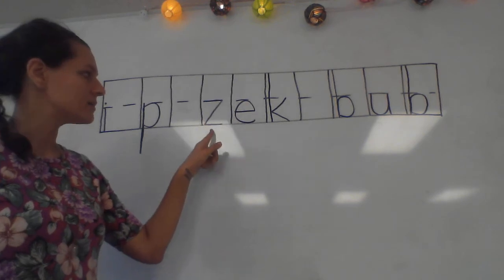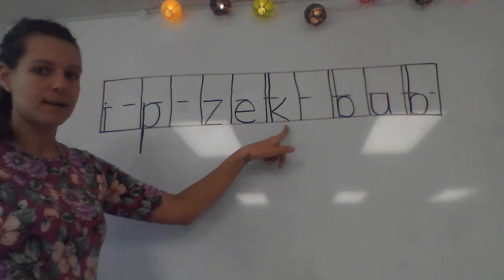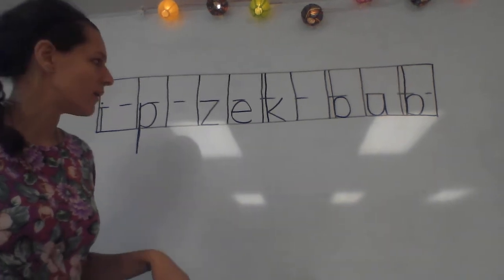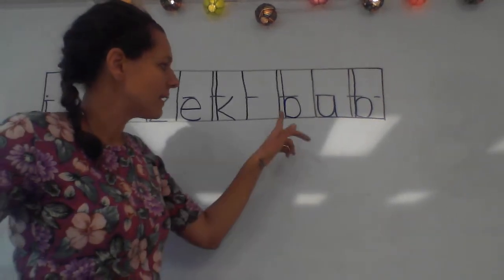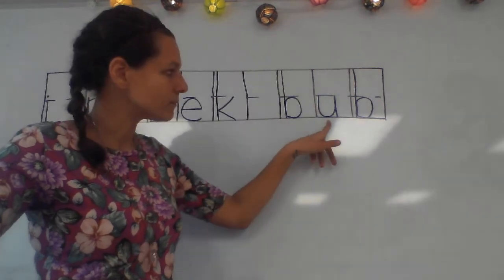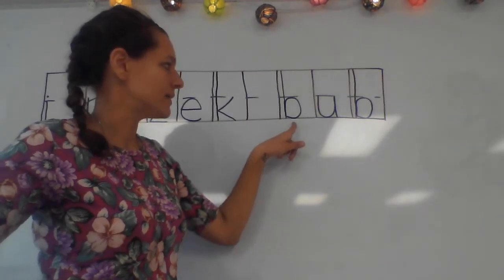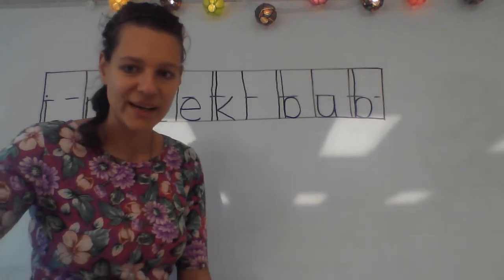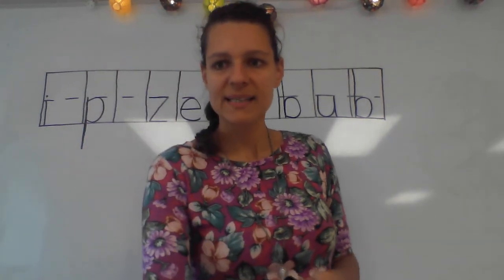Good. Z, E, K. Put it together. Good. Zek. Yeah. These are all nonsense words. How about this one? Good. It's B, U, B. Bub. All right. Excellent job, class.